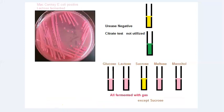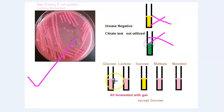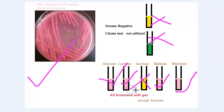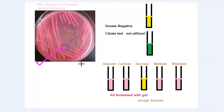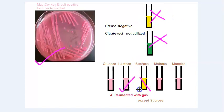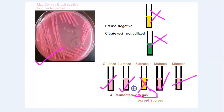Some very specific biochemical characteristics of E. coli: it ferments lactose on MacConkey agar. Urease is negative. Citrate is not utilized. Glucose, lactose, maltose, and mannitol are all fermented with gas. Sucrose is not fermented.